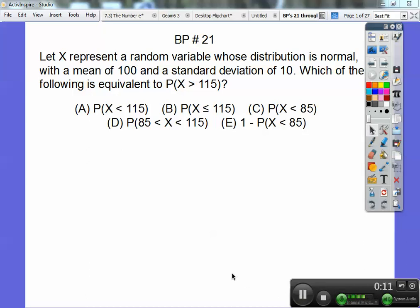Let x represent a random variable whose distribution is normal with a mean of 100 and a standard deviation of 10. So standard deviation of 10 means plus 10, plus 10, plus 10 to the right, and that would get me 110, 120, 130, and then minus 10, minus 10, minus 10. Which of the following is equivalent to the probability that your x is greater than 115?